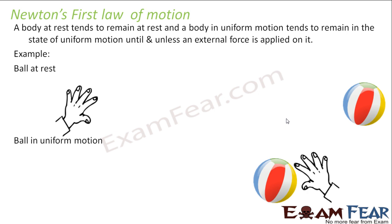When will an object move with constant velocity? When it is on a frictionless, hurdle-free surface. It will keep moving with the same constant velocity until and unless you apply some external force to stop it. So a body at rest wants to be at rest, and a body in uniform motion wants to remain in uniform motion, until an external force is applied.